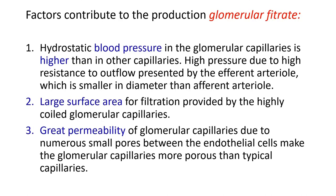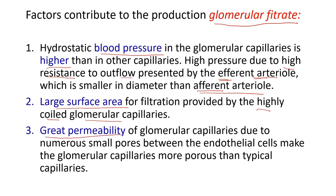Before discussing in detail how blood filtrate becomes urine, we look at three factors contributing to the production of glomerular filtrate. The first is that hydrostatic pressure in glomerular capillaries is higher than in other capillaries, because the efferent arterioles are smaller than the afferent arterioles, creating high resistance to outflow. The second is the large surface area for filtration provided by the highly coiled glomerular capillaries. The third is the great permeability of the glomerular capillaries.